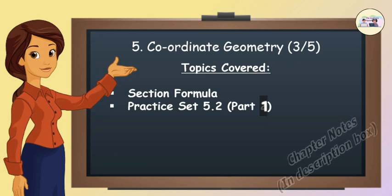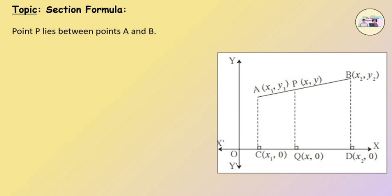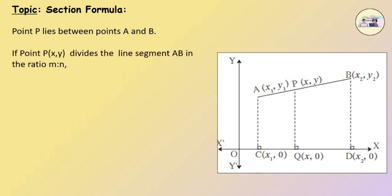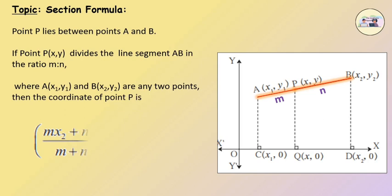Coordinate Geometry — Section Formula. In the given figure, point P lies between points A and B. If point P divides the line segment AB in the ratio m to n, i.e., distance AP upon distance BP equals m upon n, where A and B are any two points, then the coordinates of point P are: x = (mx2 + nx1) / (m + n), y = (my2 + ny1) / (m + n).